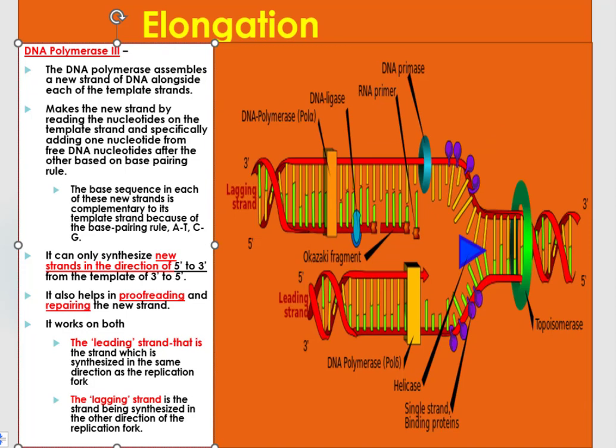At the elongation phase, DNA polymerase assembles a new strand of DNA alongside each of the template strands. This enzyme makes the new strand by reading the nucleotides on the template strand and specifically adding one nucleotide from the pool of DNA nucleotides after the other based on base pairing rules. The base sequence in each of these new strands is complementary to its template strand.